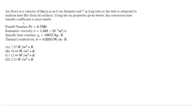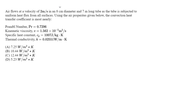Looking at this FE-type question, we're told we have air that flows at a velocity of 2 meters per second in an 8 centimeter diameter and 7 meter long tube, as the tube is subjected to a uniform heat flux from all surfaces. We're assuming small changes in temperature because we have a small tube and small diameter, so we're not going to see significant changes in properties for this question.